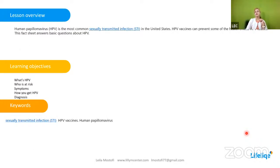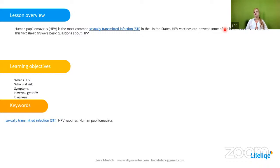Our lesson review: HPV is the most common sexually transmitted infection in the United States. HPV vaccine can prevent some of the health effects HPV causes. Our learning objectives will cover what is HPV, who is at risk, symptoms, how you get HPV, and diagnosis.